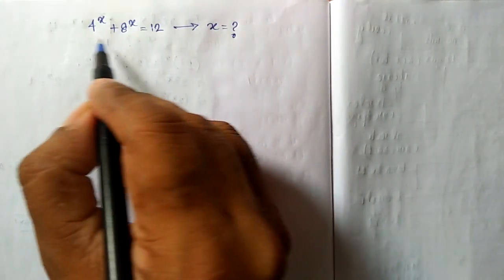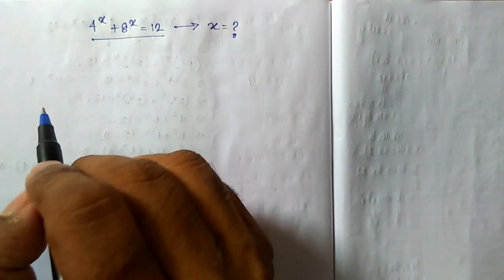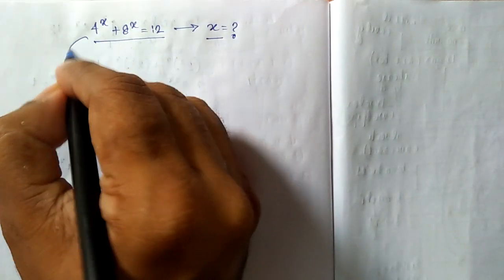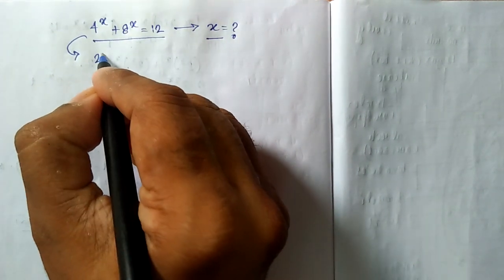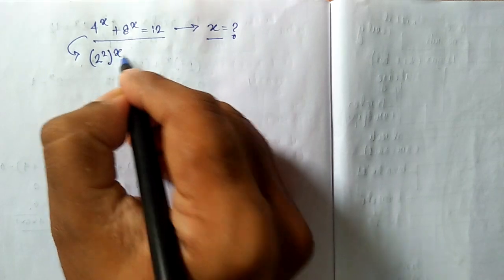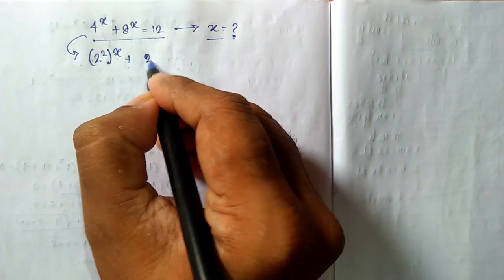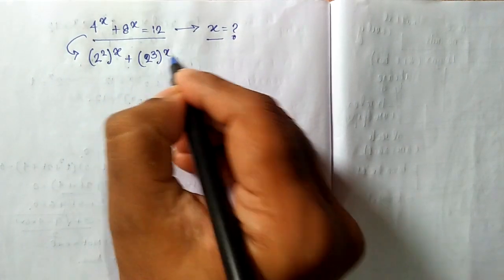Today we are going to solve this particular equation which is written over here. We have to find the real value of x. So here this expression I am writing as 4 as 2 squared whole to the power x, 8 as 2 cubed whole to the power x equal to 12.